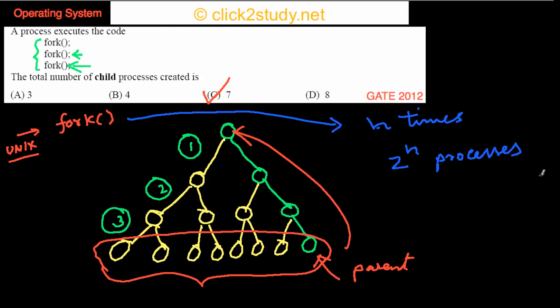And out of these, one will be the parent process, the original one, and the remaining 2 raised to n minus 1 will be the child processes. And that's it.